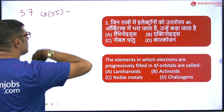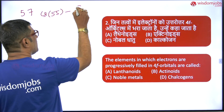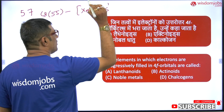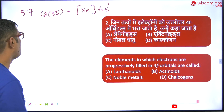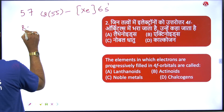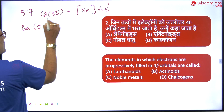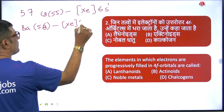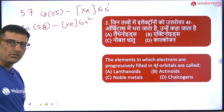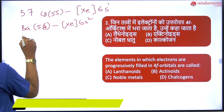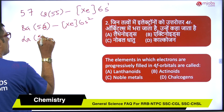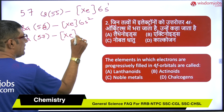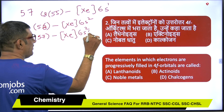Cesium has atomic number 55, so we can write it as xenon core 6s1. Barium is atomic number 56, so it is xenon core 6s2. Now coming to lanthanum, it is atomic number 57, so you have xenon core 6s2 and 4f1.